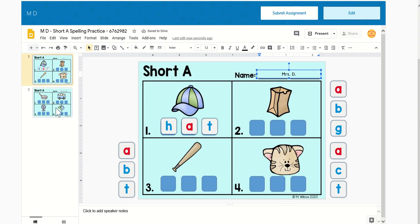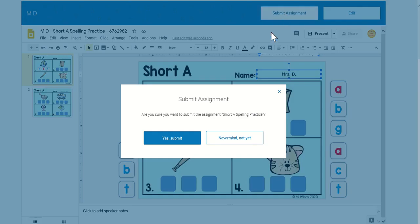When you're finished with both slides, then you're going to hit submit assignment and then you will be all finished. When you hit submit assignment, it says yes, submit with a blue button. When you're all done, you're going to push that button. If you are not finished yet, then you are going to hit nevermind, not yet.